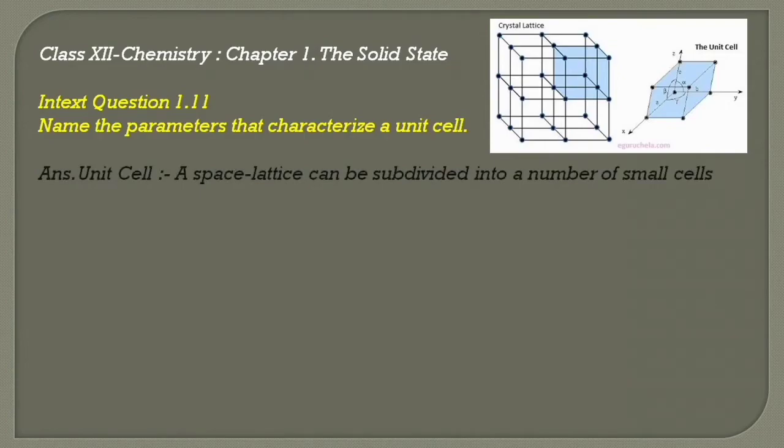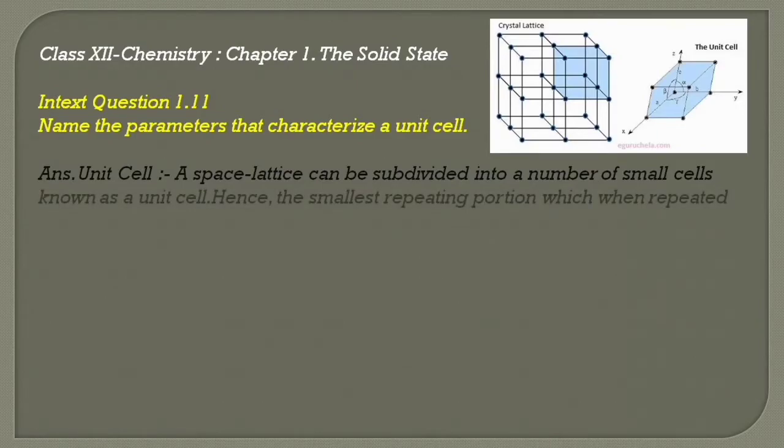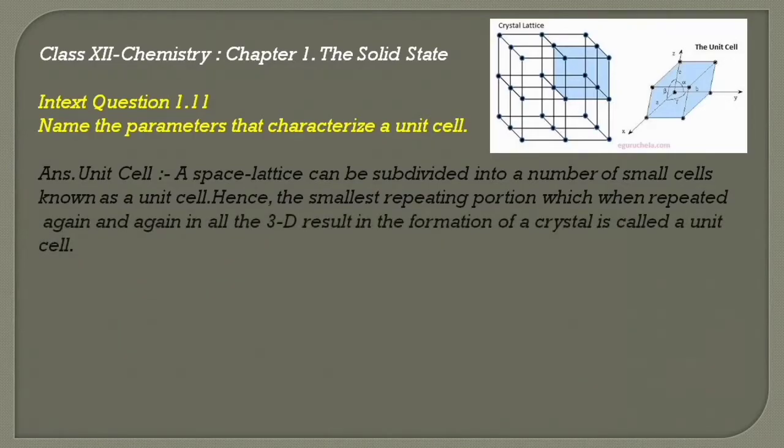The answer to that question is, first of all, we will define what a unit cell. A space lattice can be subdivided into a number of small cells known as a unit cell. Hence, the smallest repeating portion which when repeated again and again in all three dimensions results in the formation of a crystal is called a unit cell.